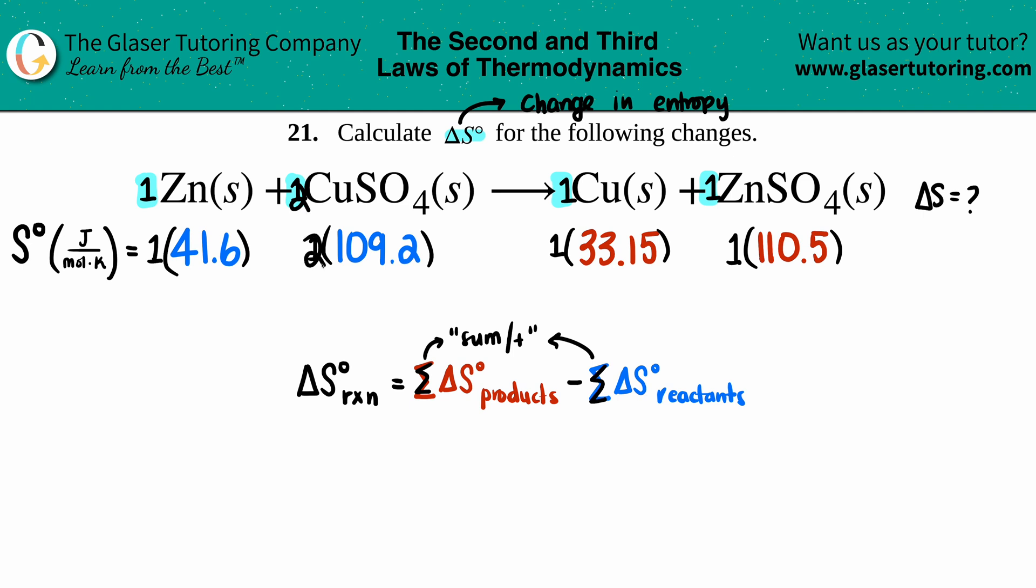Now we're talking about the sum, and literally there's plus signs for both the reactants and the products, so I have to add these values together to get one whole big number for the reactants and one whole big number for the products. So let's see what we get: 41.6 plus 109.2 is 150.8, so that's the total sum for the reactants.